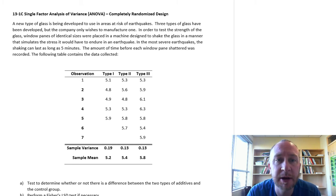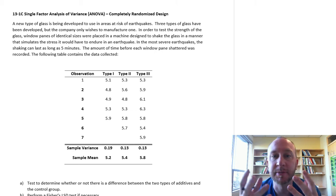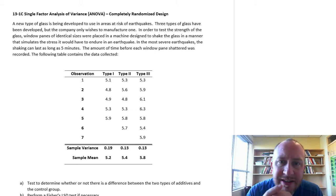Here we're looking at a new type of glass that's been developed to use in areas at risk of earthquakes. Three types of glass have been developed and the company only wants to manufacture one of them. In order to test the strength of the glass, window panes of identical sizes are placed in a machine designed to shake the glass in a manner that simulates the stress it would endure in an earthquake. In the most severe earthquakes, the shaking can last as long as five minutes. The amount of time before each window pane shattered is recorded and here's the data that we have to work with.